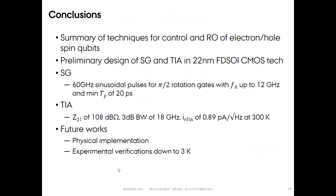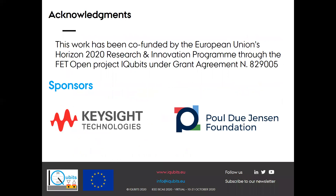To conclude, we summarized the main techniques for control and readout of electron hole spin qubits and reported the preliminary design of the signal generator and transimpedance amplifier in 22 nanometer FDSOI CMOS technology. The signal generator correctly generates 60 GHz sinusoidal pulses for pi-half rotation gates with Rabi frequency up to 12 GHz and minimum pulse duration of 20 picoseconds. The transimpedance amplifier meets the transimpedance gain requirement, and future work will address the physical implementation and experimental verification down to 3 Kelvin. We would like to acknowledge our sponsors and invite you to visit the iQubits website at www.iqubits.eu. Thank you for your attention.